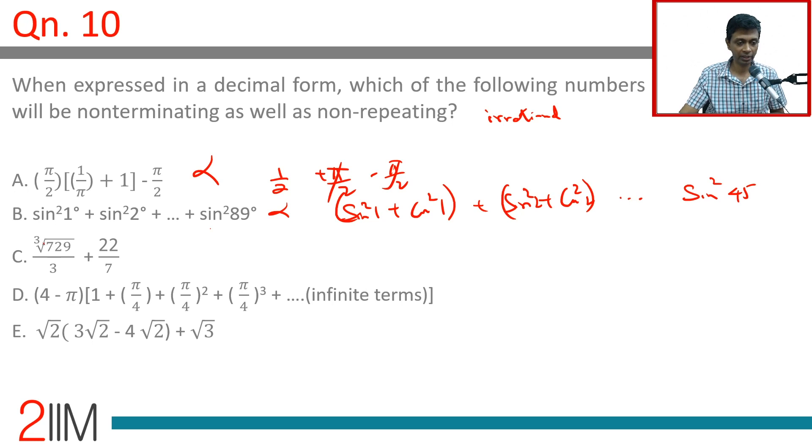Option C: Cube root of 729 is 9, and 9/3 is 3. So this is 3 + 22/7. While this is non-terminating, 22/7 is recurring (it's rational). This is not the answer choice.